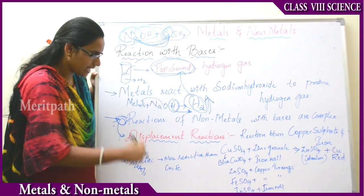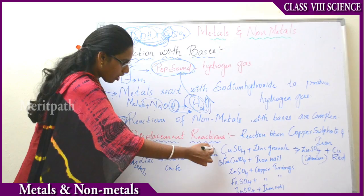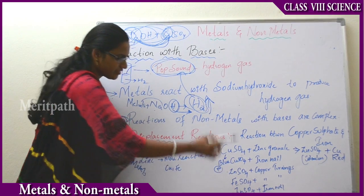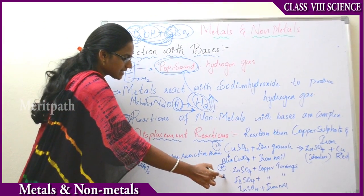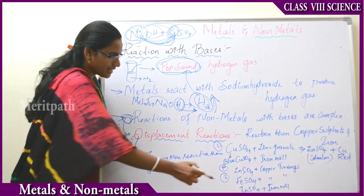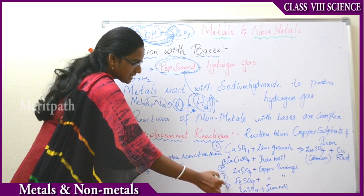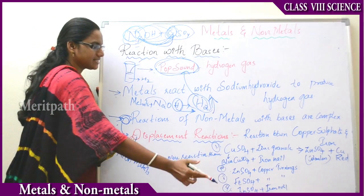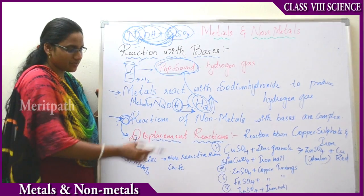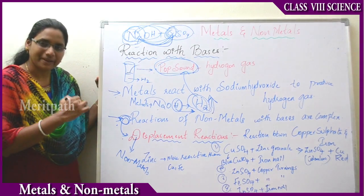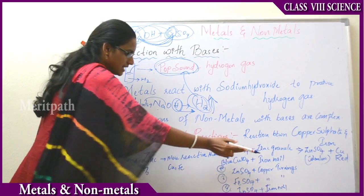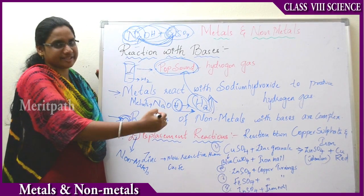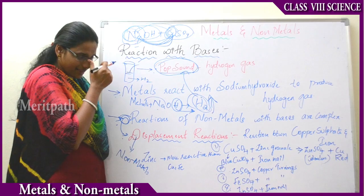Let us look at four equations to identify displacement reactions. First: copper sulfate reacted with zinc granules. Second: zinc sulfate reacted with copper turnings. Third: ferrous sulfate reacted with copper turnings. Fourth: zinc sulfate reacted with iron. So we have three sulfates — copper sulfate, zinc sulfate, and ferrous sulfate — reacting with zinc, iron, and copper.